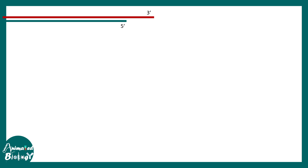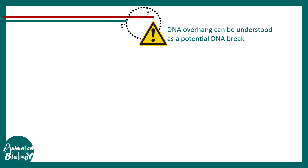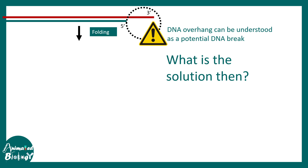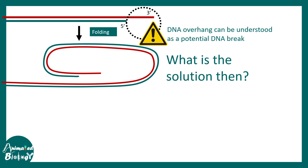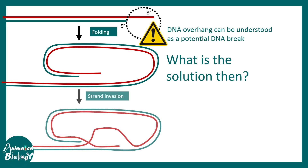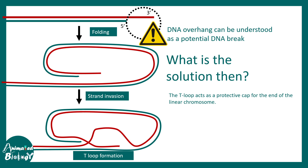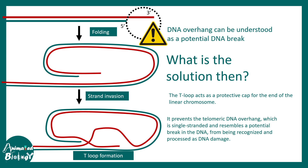The end of the telomere has a slight overhang at the 3' end. The problem is this overhang can be treated as a potential DNA break by the DNA repair machinery in the cell, which is something the cell doesn't want. The solution is pretty simple: fold it so that the machinery cannot recognize it. Folding happens gradually and sequentially — a looping mechanism tucks the overhang inside via a strand invasion process, forming a loop-like structure known as a T-loop. This T-loop acts as a protective cap for the end of the linear chromosome, preventing the telomeric DNA overhang from being recognized by the double-strand DNA break machinery, and protecting telomeres from exonuclease or DNA damage response activity.